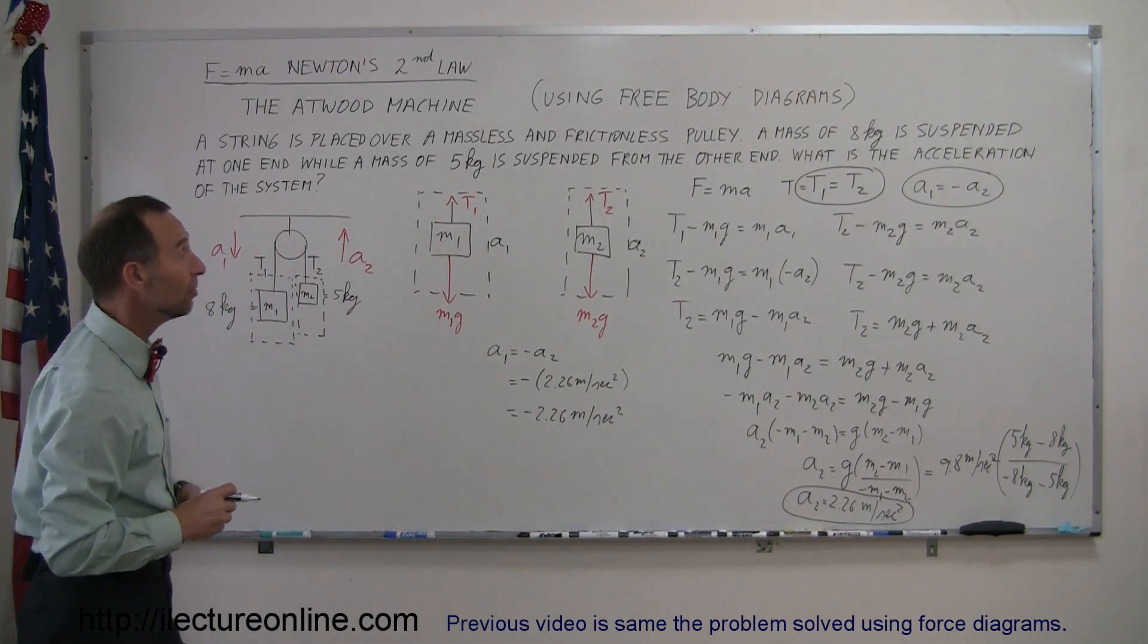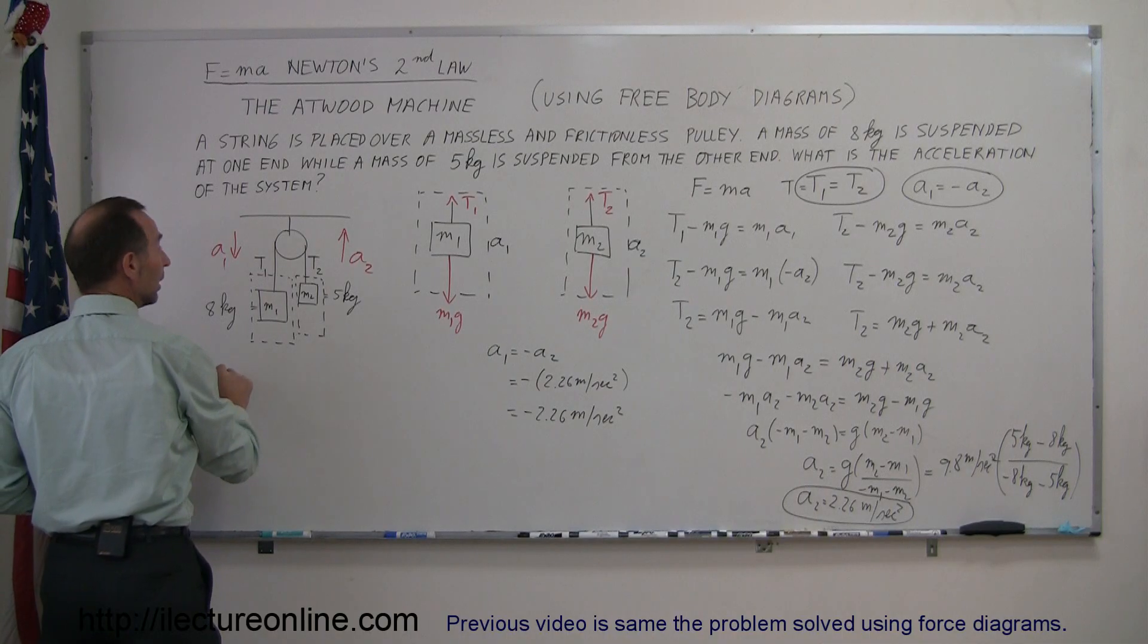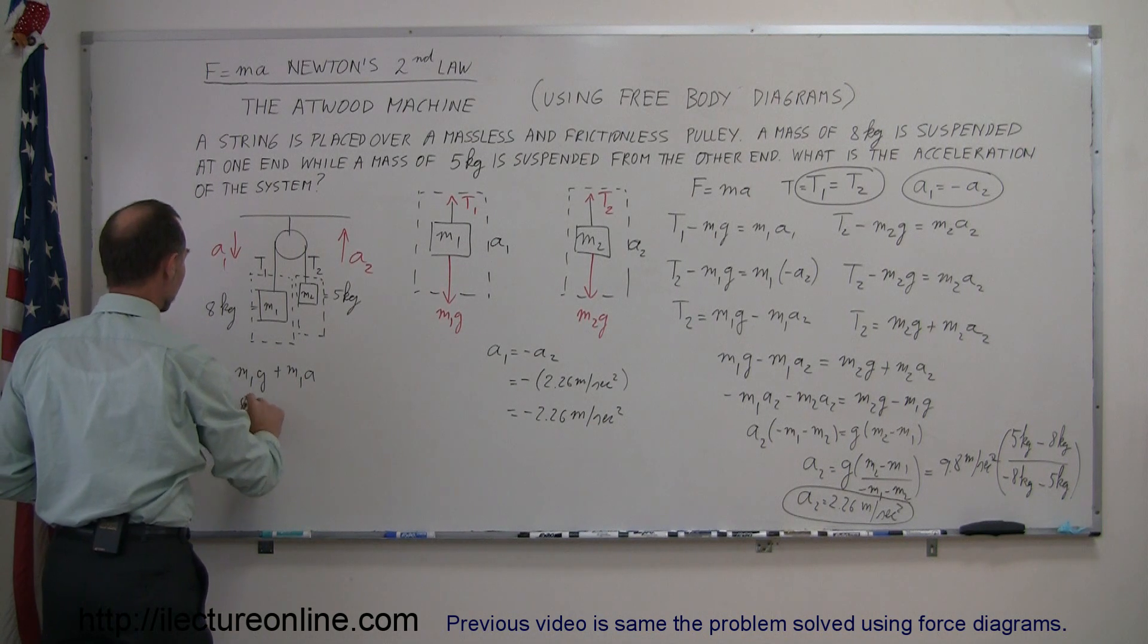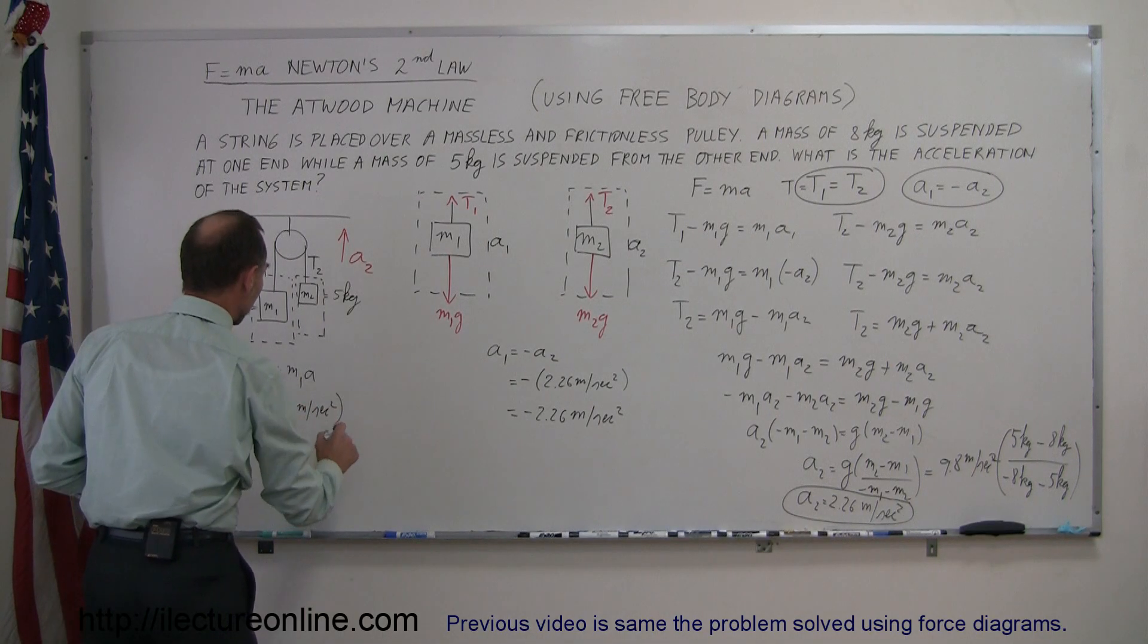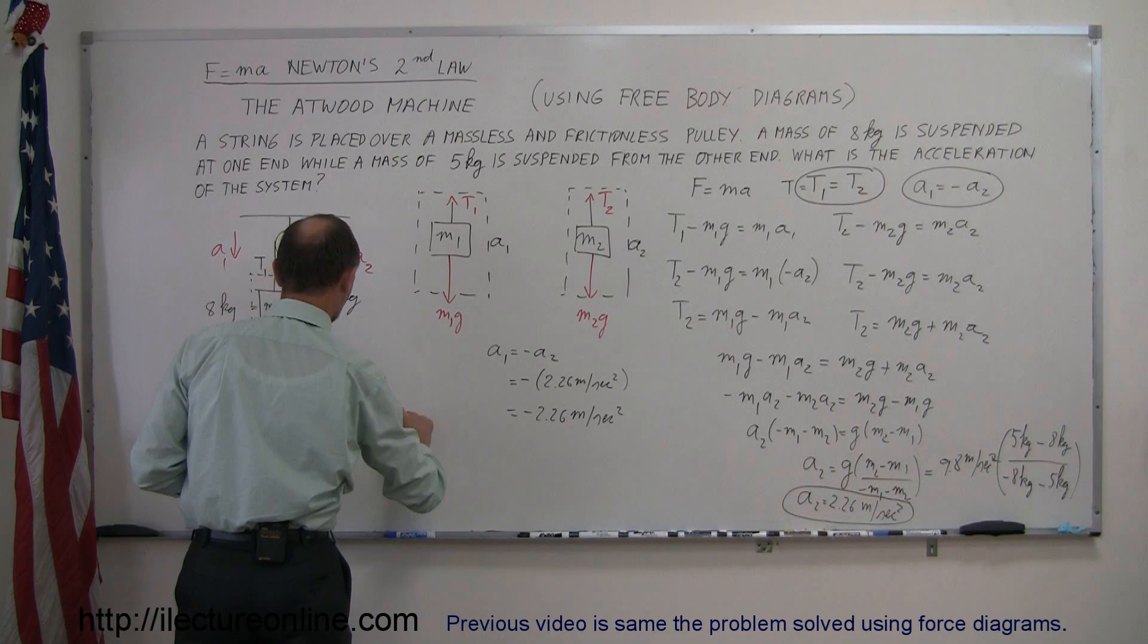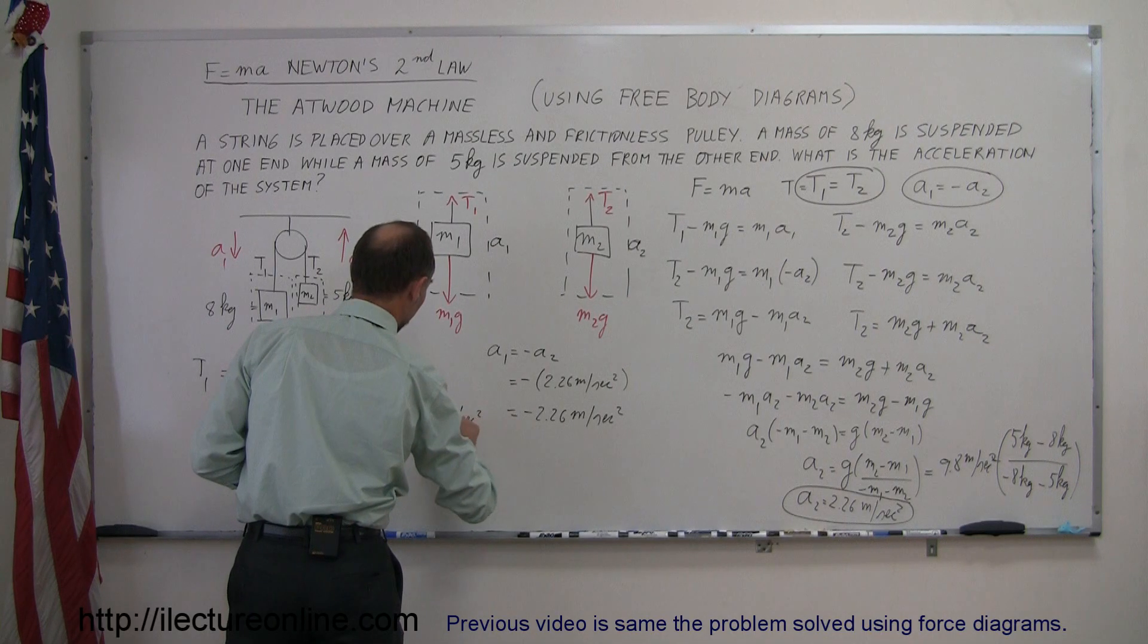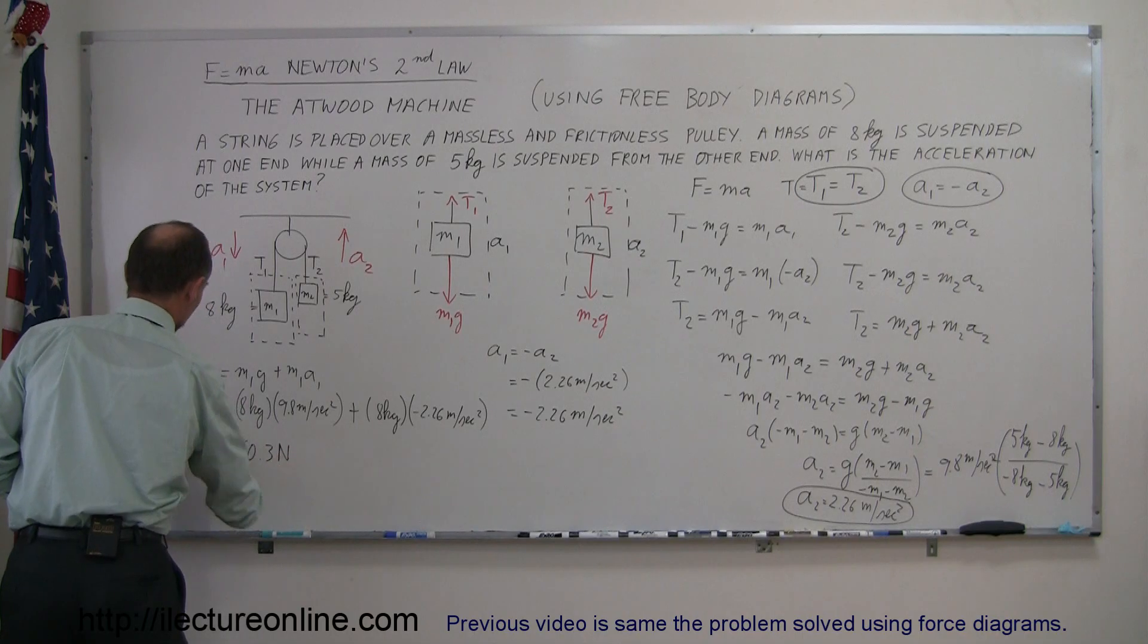If we now want to find out what the tensions are in each case, we can solve for T1 and T2. T1 equals M1G plus M1A1. M1 is 8 kilograms times G, which is 9.8 meters per second squared, plus 8 kilograms times A1, and A1 is minus 2.26 meters per second squared. When we multiply that out, it is 60.3 newtons on tension 1.